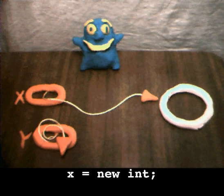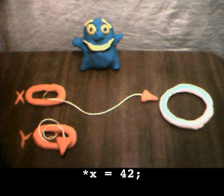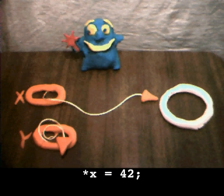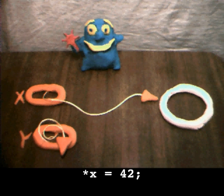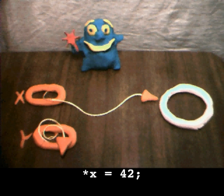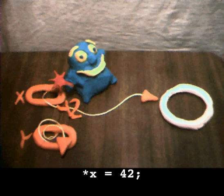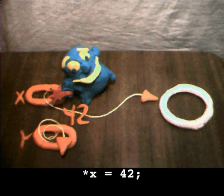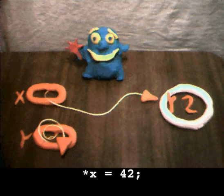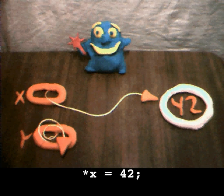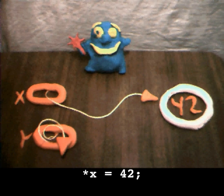Okay, I'll dereference the pointer x to store the number 42 into its pointee. For this trick, I'll need my magic wand of dereferencing. Your magic wand of dereferencing? That's great. This is what the code looks like. I'll just set up the number and... Hey, look. There it goes. So, doing a dereference on x follows the arrow to access its pointee, in this case to store 42 in there.